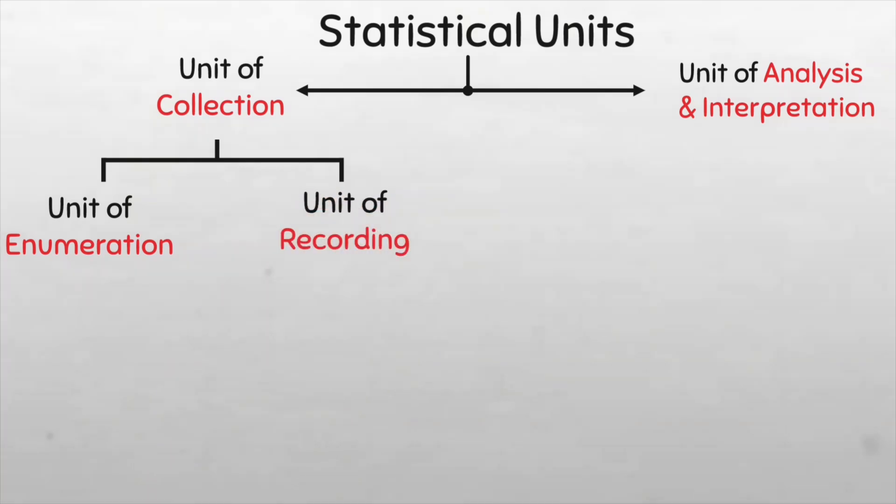The unit of enumeration refers to individual elements or members of a population that is counted during data collection. You know the word enumeration means counting. So for example, in a census, each person is a unit of enumeration.